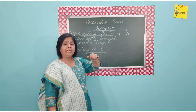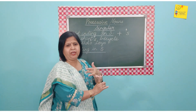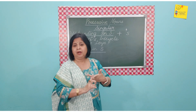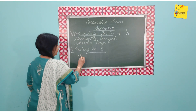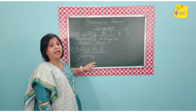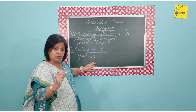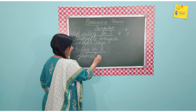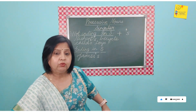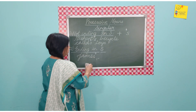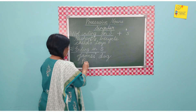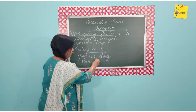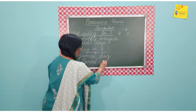There are certain proper nouns that end in S — for example names like James, Ojas, Paras, and Manas. Now if something belongs to them, for example James' dog is jet black in colour. When a noun already ends in S, we do not add apostrophe S — we leave out the extra S and just write James' with only an apostrophe. Similarly, Paras' cat — just the word Paras, an apostrophe, no extra S.